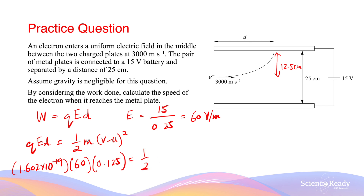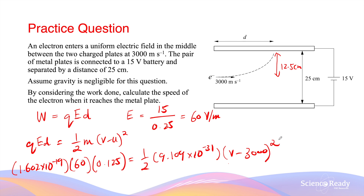Setting this equal to half times the mass of the electron, 9.109 × 10⁻³¹ kg, times (v squared minus u squared), where u is the initial velocity of 3,000 m/s, and solving for v gives a final speed of approximately 1.6 × 10⁶ meters per second.